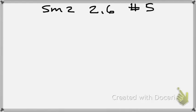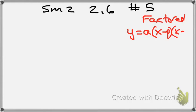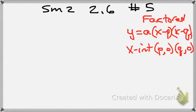They gave us factored form. Factored form is y equals a times x minus p times x minus q. What factored form tells us is it's really easy to find the x-intercepts. My x-intercepts are going to be (p,0) and (q,0). That's the really cool thing about factored form.